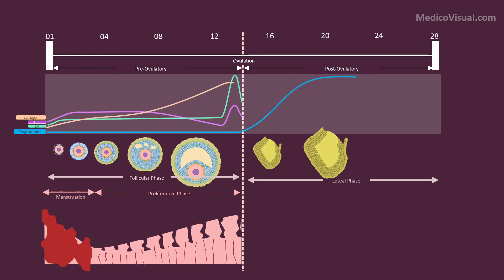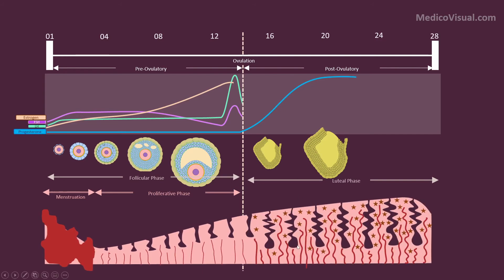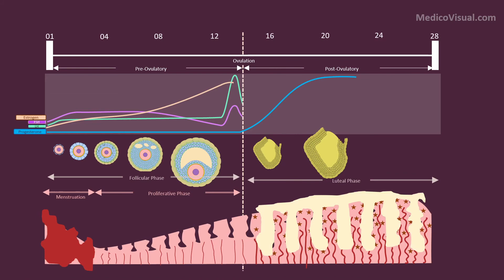Progesterone levels start rising. Progesterone causes three changes in the uterus: the blood vessels become engorged and tortuous, there is formation of glycogen-filled cells, and the glands become deepened and more tortuous with secretion of uterine milk to meet the nutritional requirements of the coming baby. We call it the secretory phase of the uterine cycle.